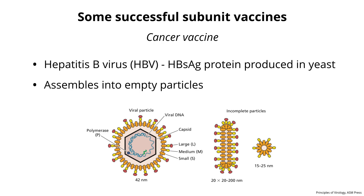Here's another interesting subunit vaccine — hepatitis B virus vaccine, which is also a cancer vaccine. Remember, hep B causes liver cancer in many people. What's done is to produce a single protein — the hepatitis B surface antigen — in yeast, and it assembles into empty particles. On the left is the complete virus with its gapped double-stranded DNA genome, icosahedral shell, and envelope. The proteins embedded in the envelope, if produced by themselves, form a variety of particles of different shapes, but they don't contain DNA — so they're not infectious, yet they are immunogenic and they protect against infection.